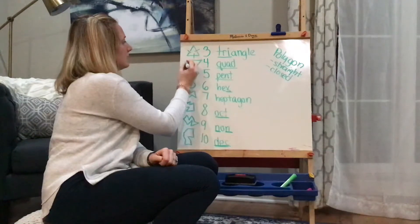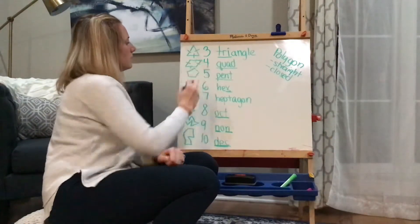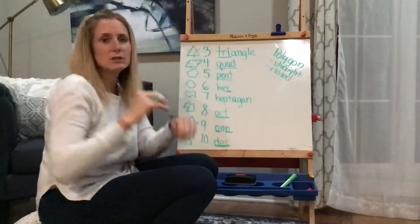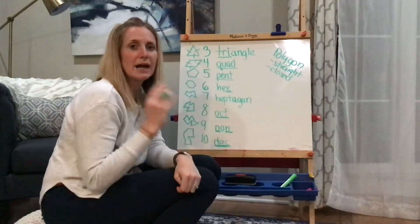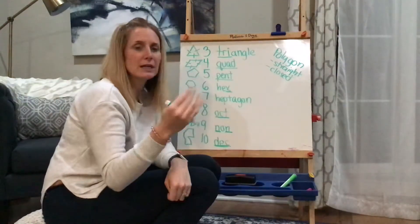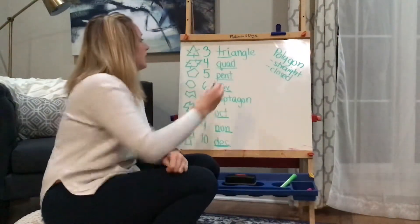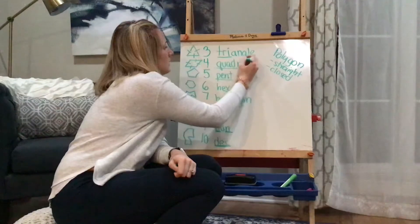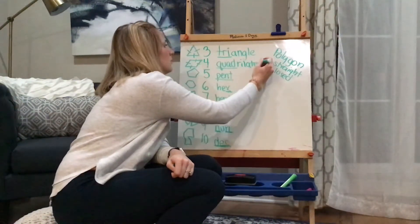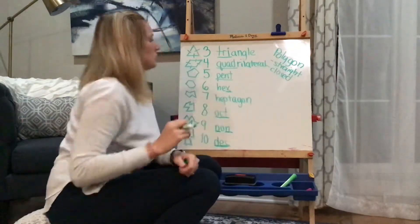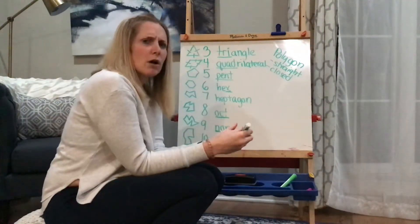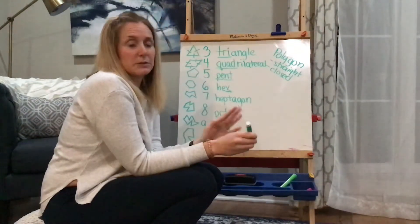This one, count the sides: one, two, three, four. If you remember, Mrs. Smith starts to sing: quadrilateral has four sides, has four sides, quadrilateral has four sides, has four sides. If you remember, Mrs. Smith told you that we're going to be learning lots of different names for quadrilaterals, but that's another lesson for another day.